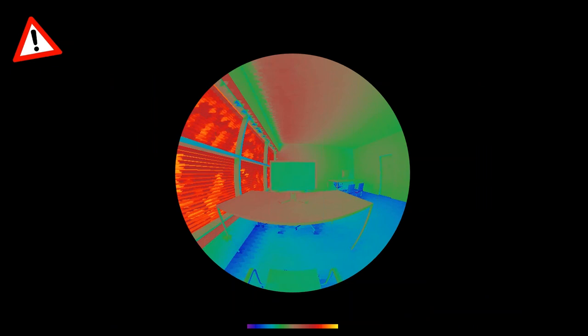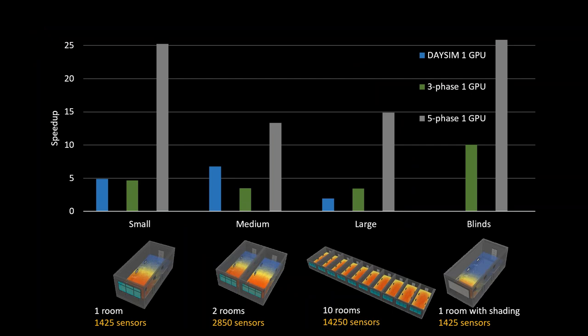Looking at speedups: the five-phase method achieves a speedup of over 25 times. DAYSIM speedups are poor, especially as the model gets large, because irradiance caching and the memory required for the large number of points and per-ray storage slows things down.